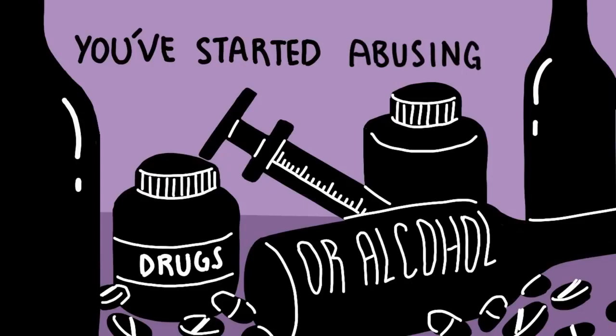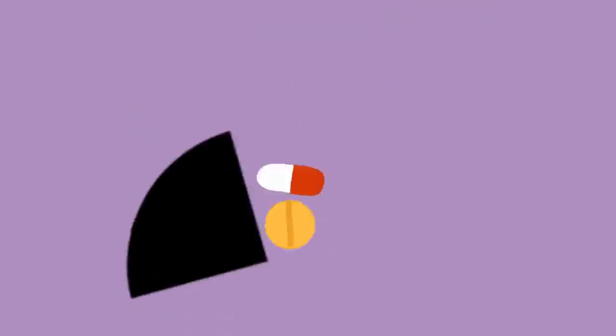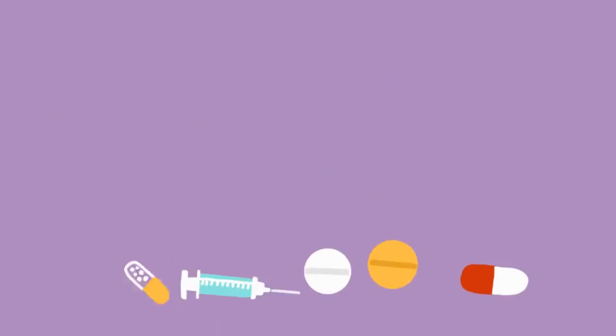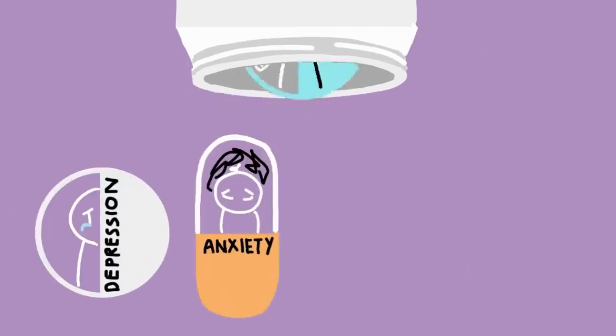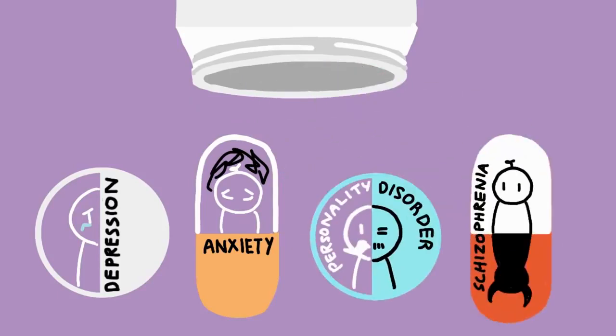Number 8: You've started abusing drugs or alcohol. According to mentalhealth.gov, 1 in 4 or 25% of people who live with the symptoms of a mental illness use alcohol or drugs to self-medicate things like anger, anxiety, or mania. Experts believe individuals who suffer from depression, anxiety disorders, personality disorders, or schizophrenia are more likely to use drugs and alcohol as a coping mechanism than people diagnosed with other mental illnesses.